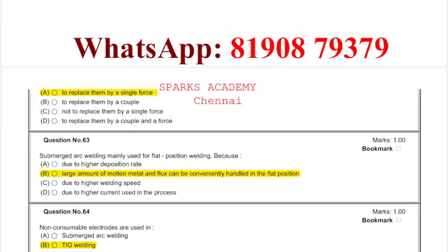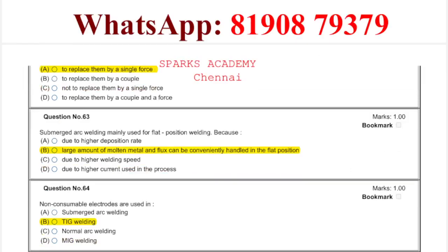Question number 63: the answer is option B — submerged arc welding uses flat position welding because a large amount of molten metal and flux can be conveniently handled in the flat position.